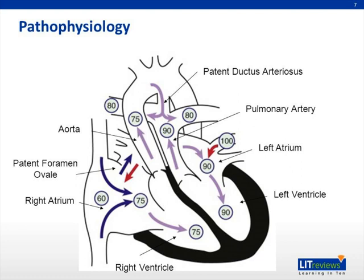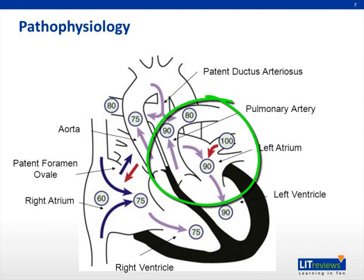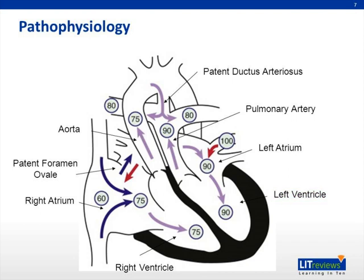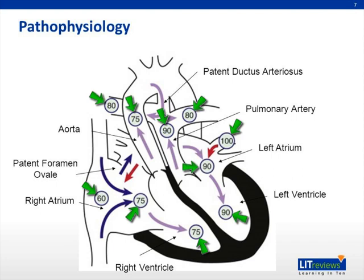This figure depicts the physiology of transposition of the great arteries. The superior and inferior vena cava connect normally to the right atrium, which fills normally into the right ventricle. However, in patients with transposition, the aorta arises from the right ventricle. On the left side, the pulmonary veins connect normally to the left atrium, emptying into the left ventricle, but the pulmonary artery arises from the left ventricle. To understand how children survive with this lesion, we need to discuss cardiac output and mixing of the circulation.